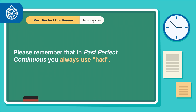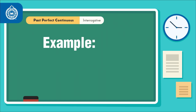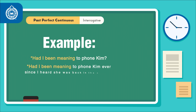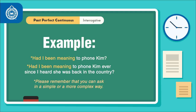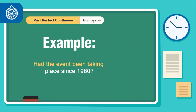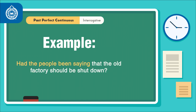Please remember that in past perfect continuous, you always use 'had'. Here are some examples: Had I been meaning to phone Kim? Had I been meaning to phone Kim ever since I heard she was back in the country? Please remember that you can ask in a simple or a more complex way. Had the event been taking place since 1980? Had the people been saying that the old factory should be shut down?